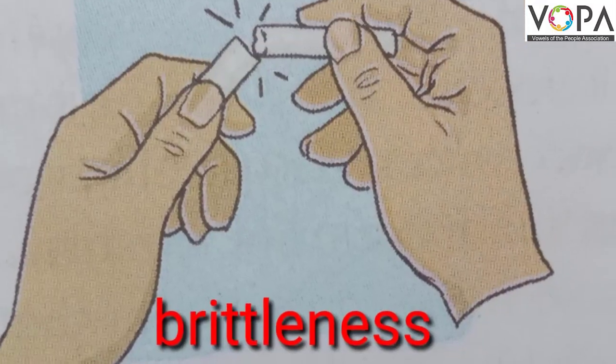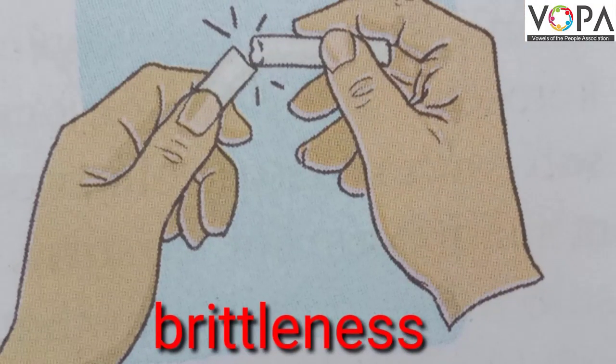Look at this. This substance breaks into small pieces or particles easily. It's called a brittle substance, and its property is called brittleness.